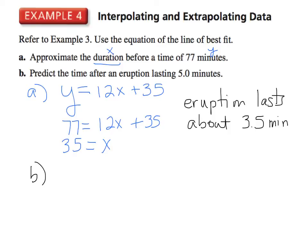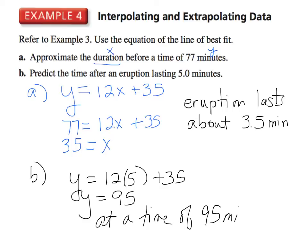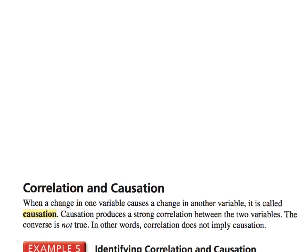Then part B, predict the time after an eruption lasting five minutes. So it says that we could use a graphing calculator to graph the equation and then use the trace feature to find the value of y when x is approximately 5. Or we can just take our equation, plug in 5, y equals 60 plus 35, which is 95. So that means a time of 95 minutes would follow an eruption of approximately 5 minutes long. Now I'm actually starting this at the bottom. I'm going to move it up, adding more stuff as we go.